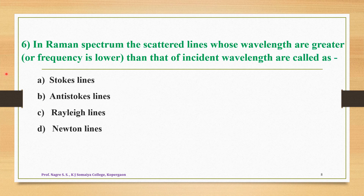Question 6: In Raman spectroscopy, the scattered lines whose wavelength is greater, or frequency is lower, than that of the incident wavelength are called as — option A: Stokes lines, option B: anti-Stokes lines, option C: Rayleigh lines, option D: Newton lines. The correct answer is option A — these lines are called as the Stokes lines.